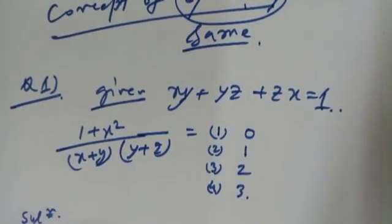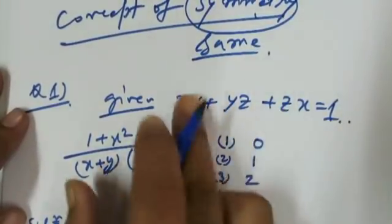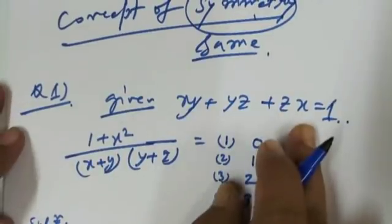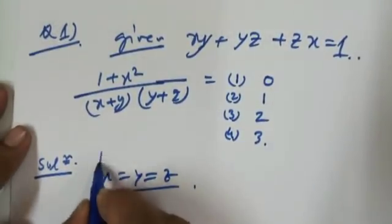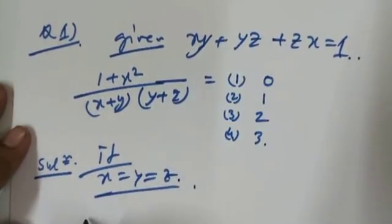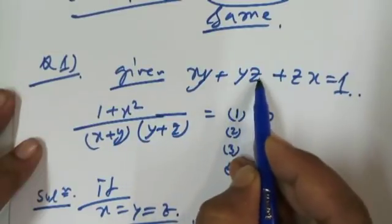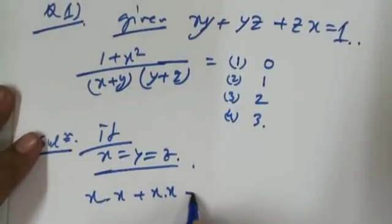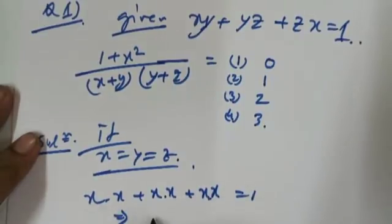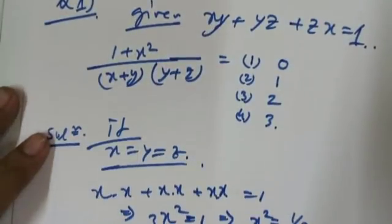The solution is very easy using the concept of symmetry. There are 3 variables and 1 equation, so we put x = y = z. Then xy becomes x², so xx + xx + xx = 1, that is 3x² = 1, and x² = 1/3.